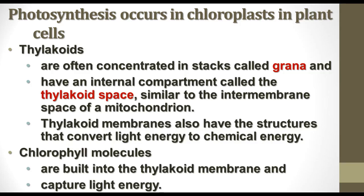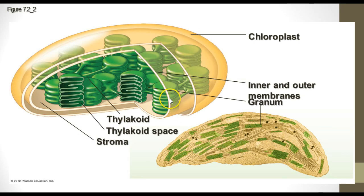The thylakoids are often stacked in little stacks called grana. They have an internal compartment called the thylakoid space, which is very similar to the intermembrane space in the mitochondrion. They also contain chlorophyll and other molecules that convert light energy to chemical energy. The chlorophyll molecules are part of the thylakoid membrane and are the parts that help capture the light energy used to power these processes.